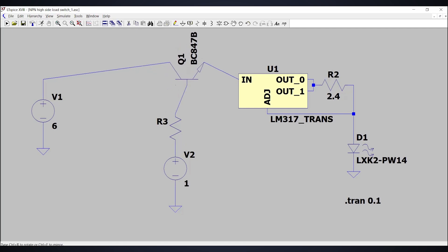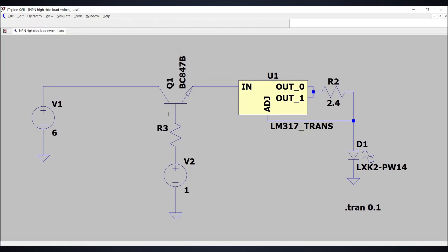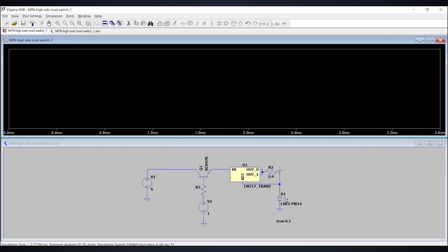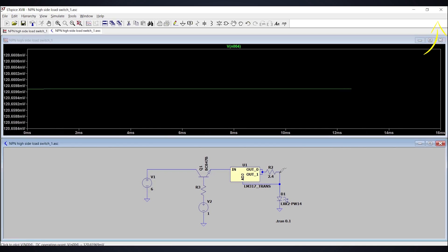This is a simulation where an NPN transistor is used as a high side switch. If you don't remember what is a high side switch and low side switch, then please check out my previous video by clicking on this card.